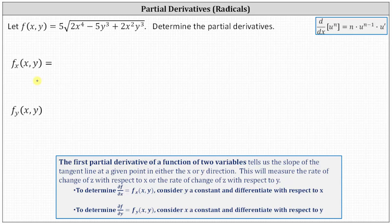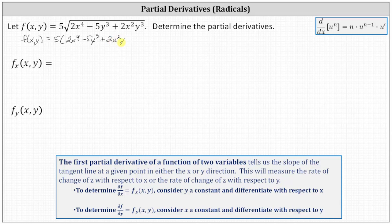Before we begin, we need to write the square root using the rational exponent of 1/2, indicating f of x comma y is equal to five times the quantity 2x to the fourth minus 5y cubed plus 2x squared y cubed, all to the power of positive 1/2. To find both partial derivatives, we'll be using the derivative formula shown here on the right, which is the general power rule, or the power rule with the chain rule.